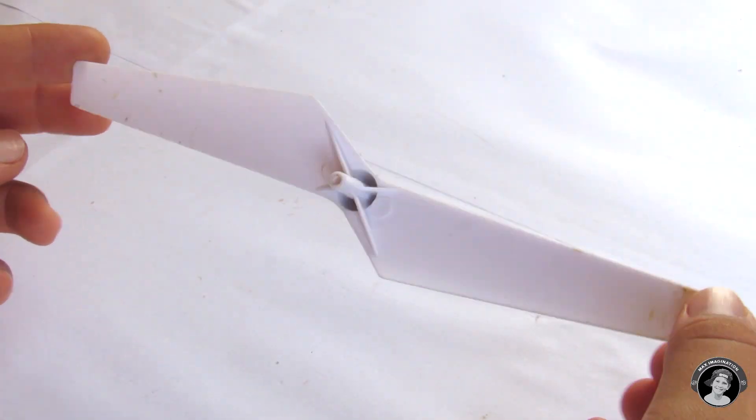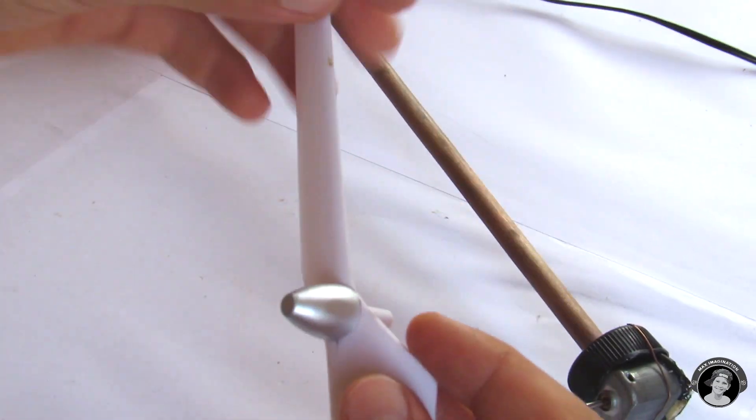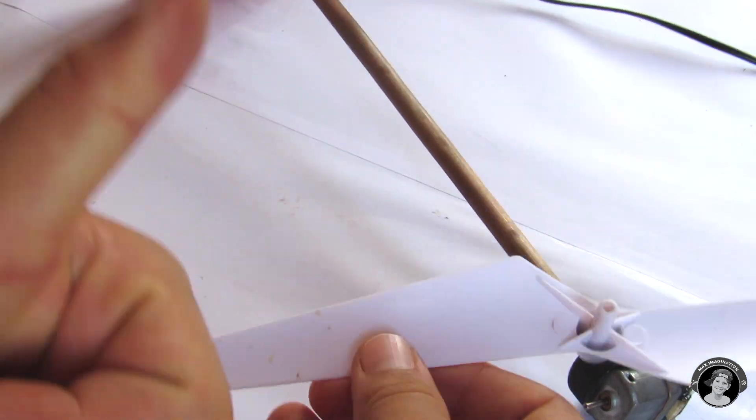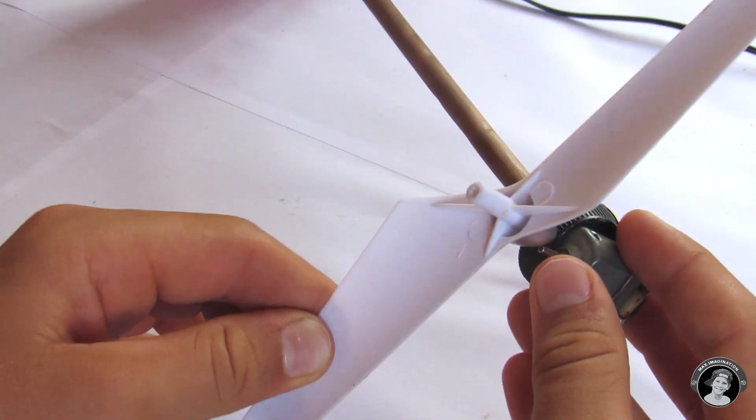Now for the propeller, since we want the most wind coming out of it, don't face it this way, but turn it around and attach it on that way, so that more wind will be pushed.